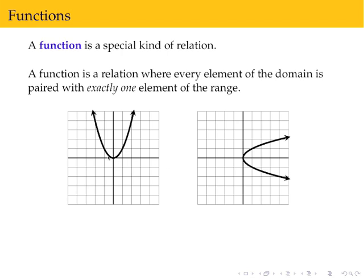If I go over to this first graph, every single place, I have an x value that is paired with exactly one y value. Every element of the domain is paired with exactly one element of the range. So, as we said, this one is not a function and this one is a function.